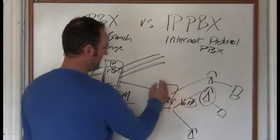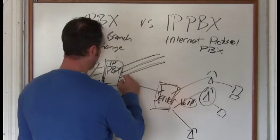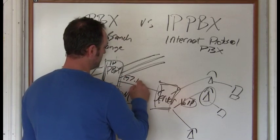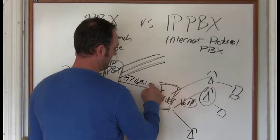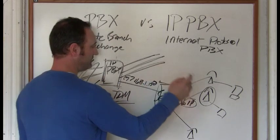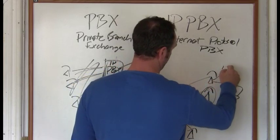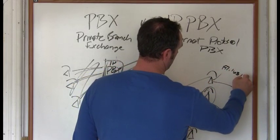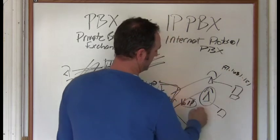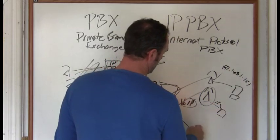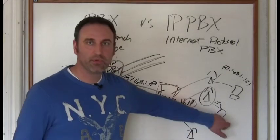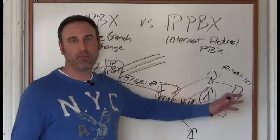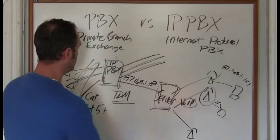Your IP PBX is going to be on the LAN. It's going to have an IP address - 192.168.1.150, say. And then all of these are going to have IP addresses - 151, 152, and so forth. Your computers are going to have IP addresses too, so this is all going to reside on the LAN.